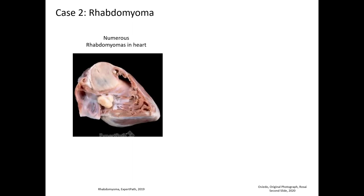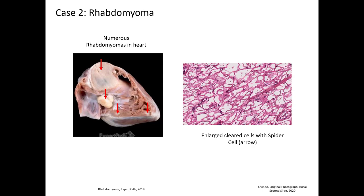Case 2 is rhabdomyoma. Here is the gross picture which has numerous rhabdomyomas — here is a very large one, here is another one, here is another one, and here is another small one. Here is the histology. You can see the rhabdomyoma is composed of these large cleared cells, and there is a spider cell right here in the middle.